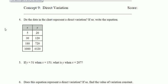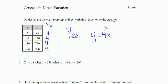The next concept is concept nine. Do the data in the chart represent a direct variation? If so, write the equation for number four. Let's take a look here. I want to analyze all the y divided by x values. So 20 divided by five is four, 120 divided by 30 is four, 720 divided by 180 is four, and 4320 divided by 1080 is also four. Yes, they do represent a direct variation. The equation is y equals four x, where four is the variation constant.